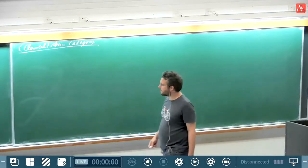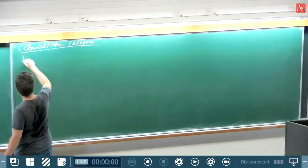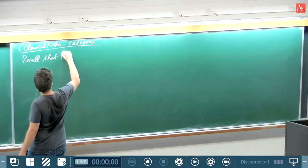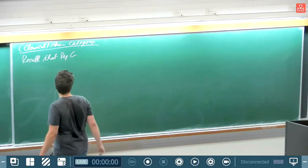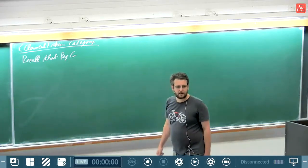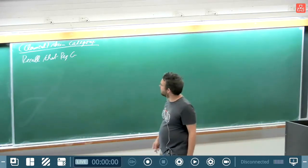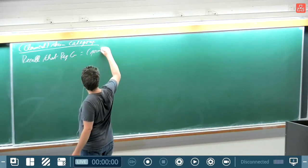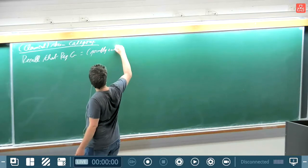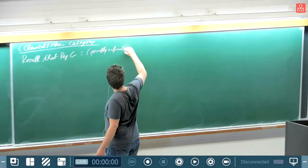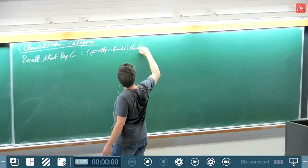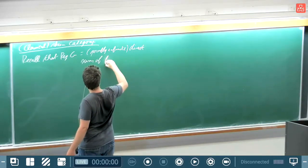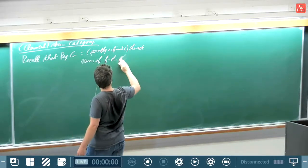Even if I only care about the character variety and loops on the surface, it's actually better to have pieces of loops - to look at some sort of category. This is what's called a classical skein category. I should really say 'a' skein category because there are many versions of it. The representation category of G is a very big category - possibly infinite indexed direct sums of finite-dimensional G-modules.